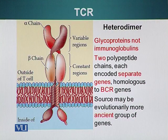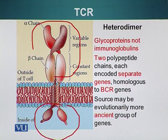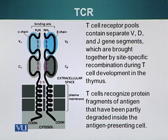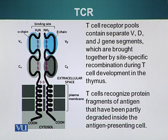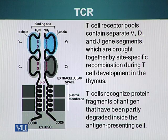Just like B cell receptors, there is an extracellular domain of the TCR sticking outside the cell, a cytoplasmic domain, and a stretch of hydrophobic amino acids embedded in the plasma membrane. The T cell receptor is also responsible for recognizing several different molecules — antigens being displayed with the help of MHC molecules — so we also need large diversity of these molecules.